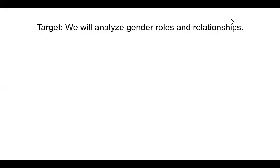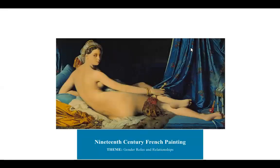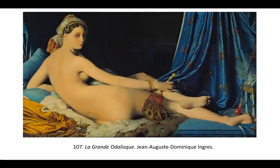We're going to be starting to look at more modern works, and we're going to be focusing on gender roles and relationships, looking still at 19th century painting. This will start with some of the context for La Grande Odalisque by Ingres.